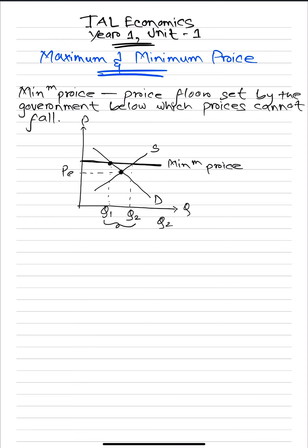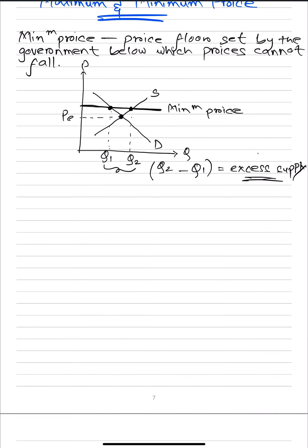With higher prices, consumers are willing to buy less — say Q1. The amount Q2 minus Q1 is the excess supply, or surplus. So when a minimum price is set, because prices are higher, suppliers supply more, consumers buy less, and there will be excess supply in the market.